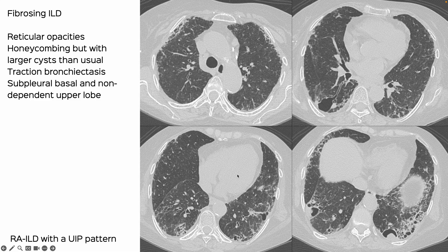So this is RA-ILD with a UIP-like pattern, but with some variant features, which we know can occur with connective tissue diseases.